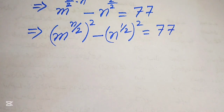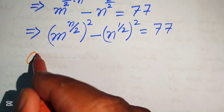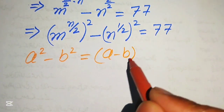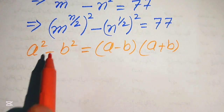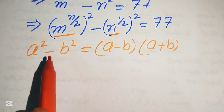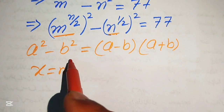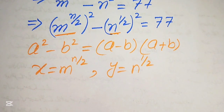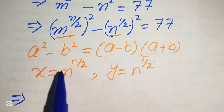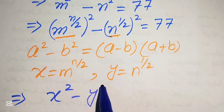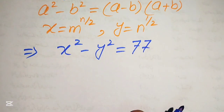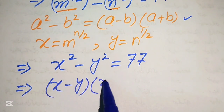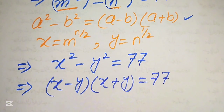In the next step we apply the algebraic formula: a squared minus b squared equals a minus b times a plus b. We let x equal m to the power of n over 2 and y equal n to the power of 1 over 2. Substituting these into the equation gives us x squared minus y squared equals 77, which factors as x minus y times x plus y equals 77.